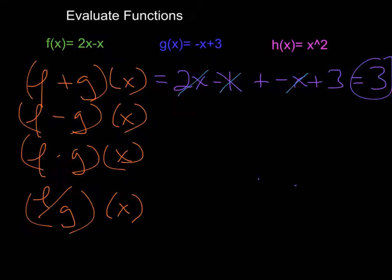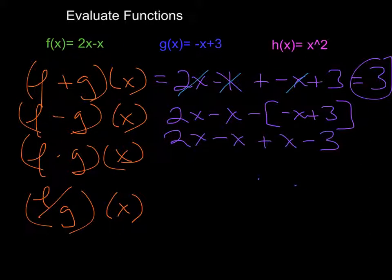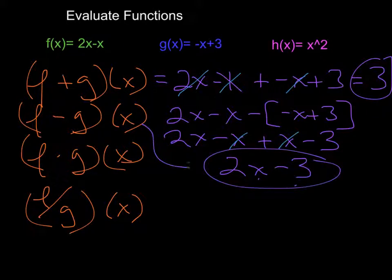Let's do f minus g of x. So I'm going to do 2x minus x — that's my f function — and I'm going to minus in parentheses my g function, which is negative x plus 3. Distributing the negative and rewriting: 2x minus x plus x minus 3. The two x terms cancel, and my final answer is just 2x minus 3.